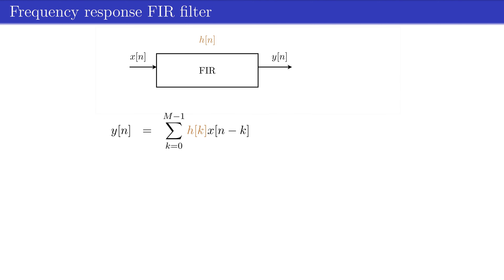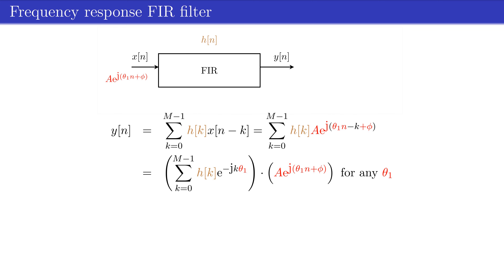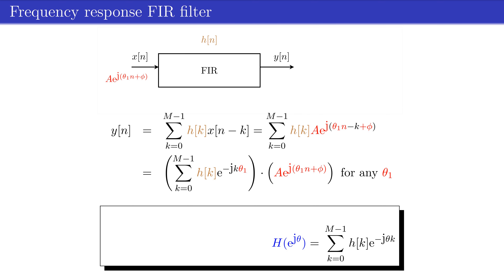In general, we can describe the output of an FIR filter by a finite convolution sum between the impulse response h(n) and the input signal x(n). When the input signal is a phasor with frequency theta, amplitude A, and phase phi, the output writes as a given equation, which can be split into two terms. The second term is the input phasor, and the first term is a complex number. Because this derivation holds for any frequency, we can replace the specific frequency theta1 by the variable frequency theta, and the first term becomes a complex function with function variable theta. This function is called the frequency response, denoted by the capital letter H.